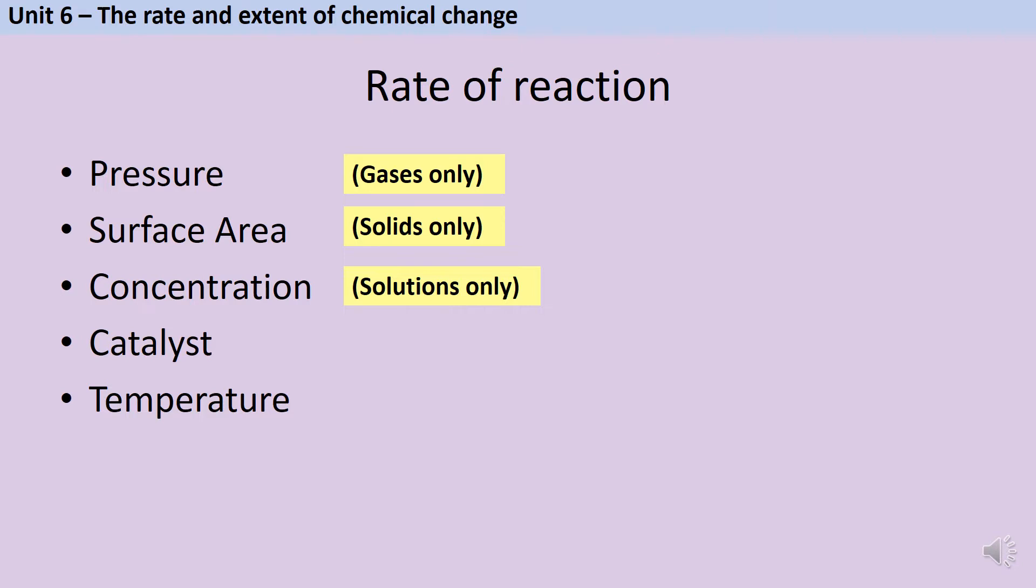A catalyst can also be added. Catalysts are chemicals which speed up the rate of reaction without being used up themselves. Finally, it's possible to increase the rate of a reaction by increasing the temperature.